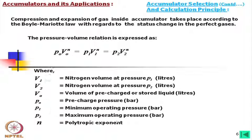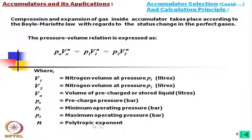To clarify: V1 is the nitrogen volume at minimum system pressure P1; V2 is the nitrogen volume at maximum system pressure P2; V0 is the volume at pre-charge pressure P0. P1 is the minimum operating pressure, P2 is the maximum operating pressure, and N is the polytropic exponent.